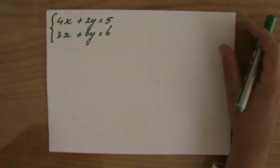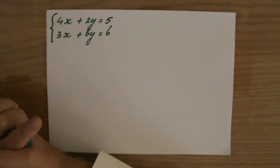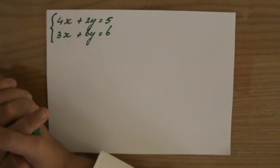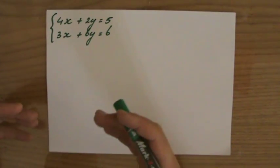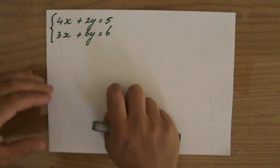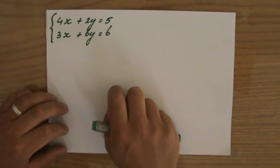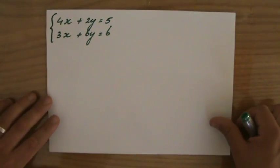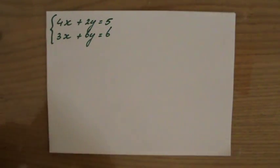What do I have to do? I have to manipulate one of the two equations or both of them and make sure that the coefficients of one of my variables become the same in each equation. Now that is a very long sentence, probably lost you there halfway through. What do I mean?